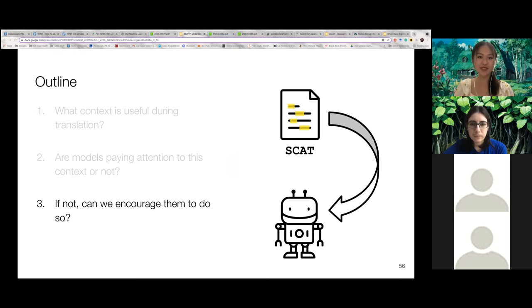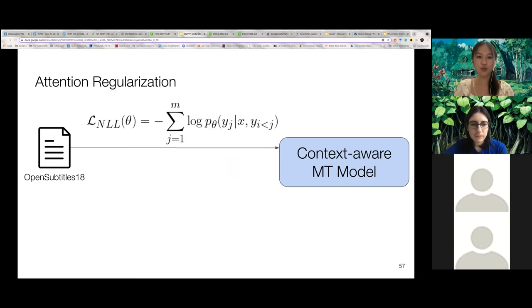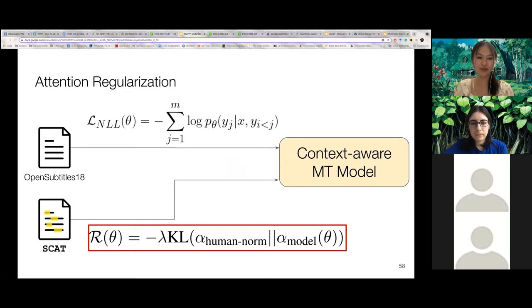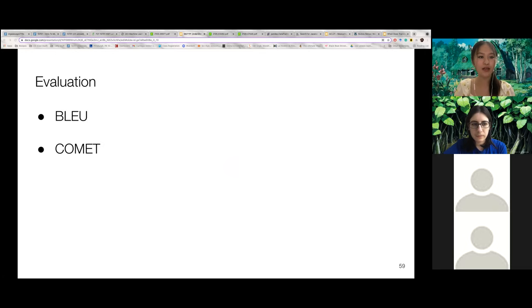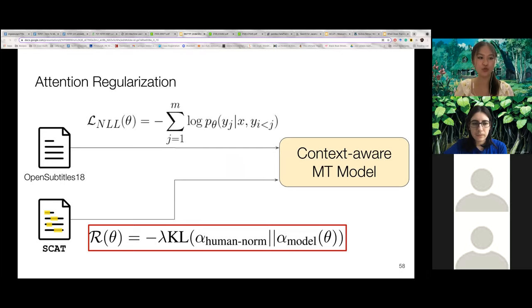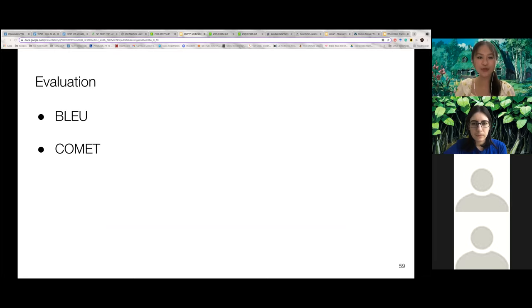So we therefore use SCAT to increase the model-human alignment. To do so, we train a context-aware model on OpenSubtitles with a standard negative log likelihood loss. And we additionally sample from SCAT during training to introduce the attention regularization loss. So the intuition behind this is that during training, we encourage models to pay attention to words that were selected by humans from our user study.